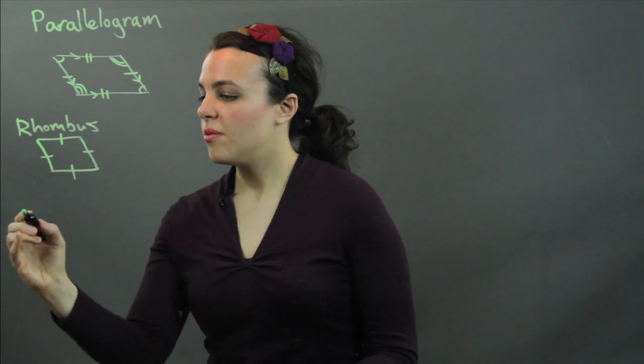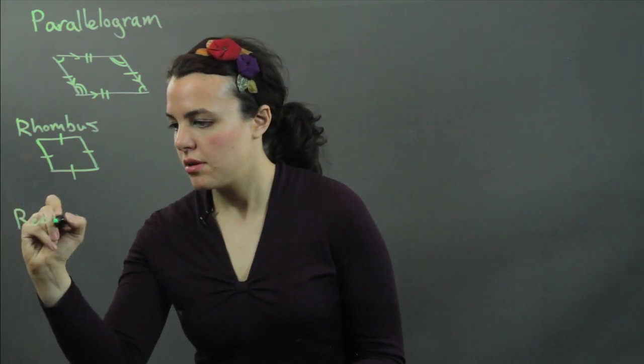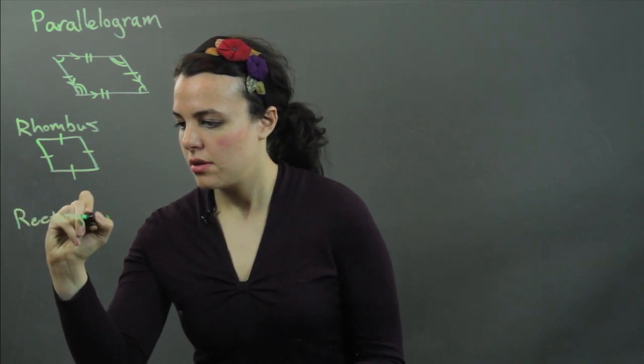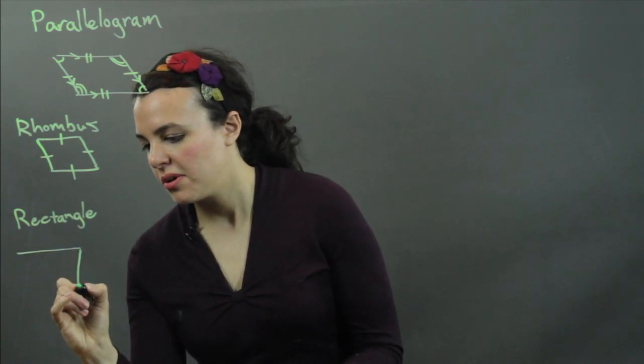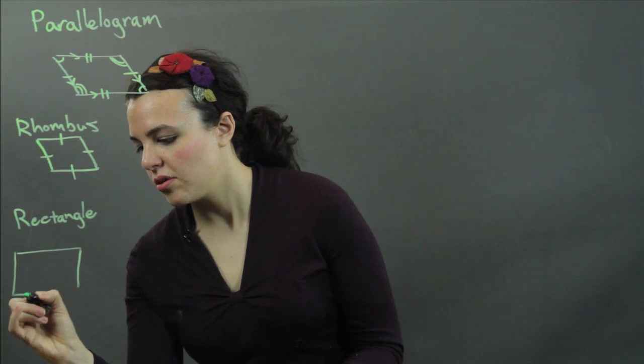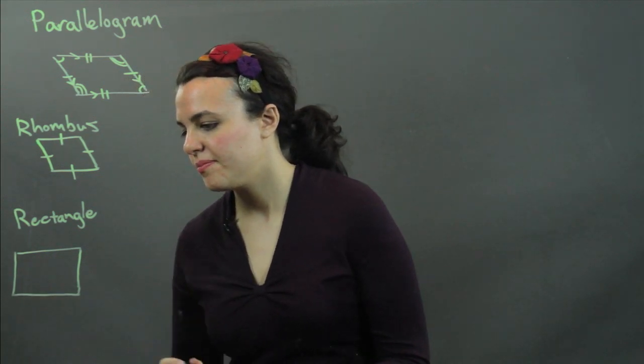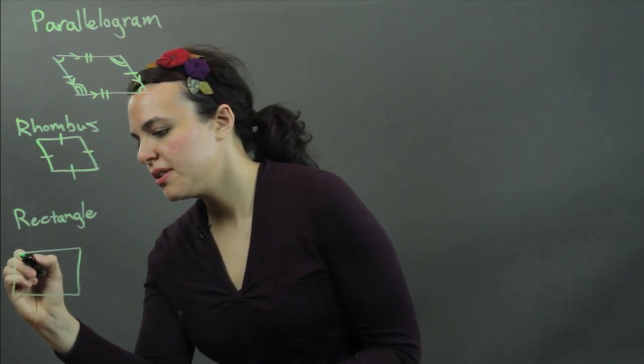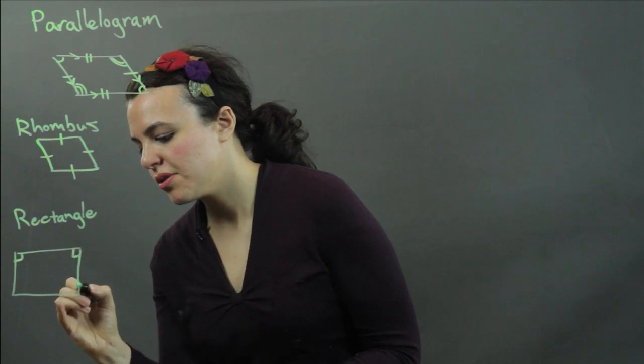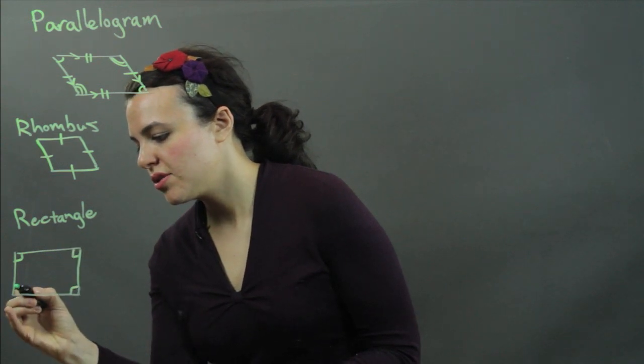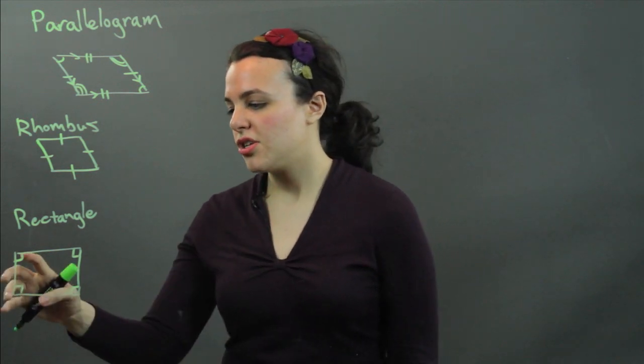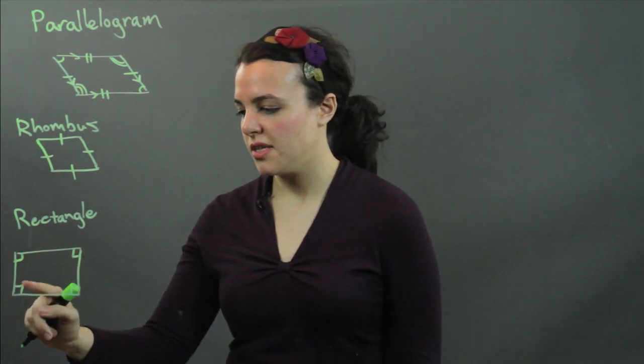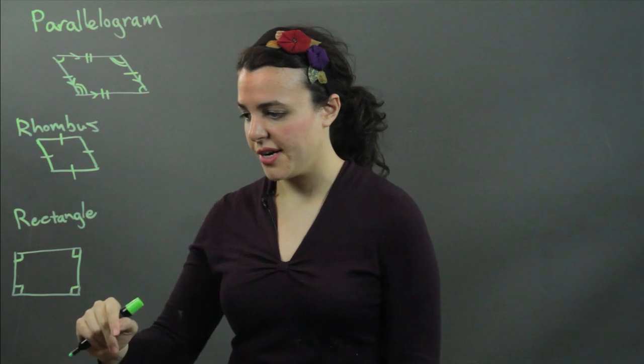Then we have rectangles. A rectangle is a parallelogram, all the qualities of a parallelogram, except all its angles are congruent. And since a quadrilateral's interior angles all add to 360, each angle in a rectangle is 90 degrees, or it's a right angle.